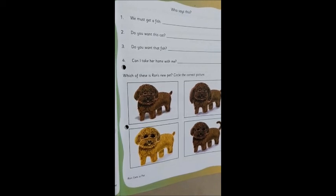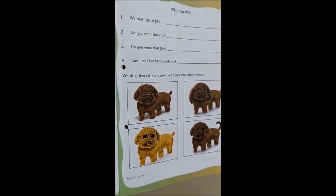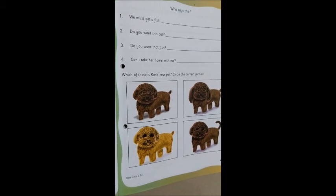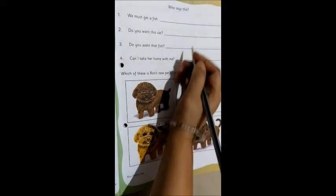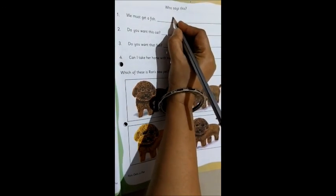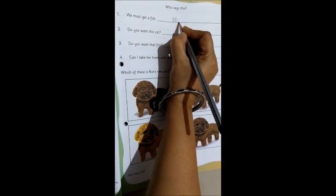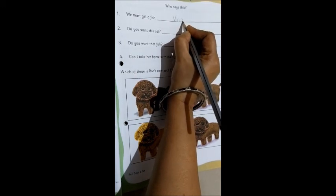We must get a fish. Who says this? Put on your thinking caps. Right. Mum. So, we will write capital M, U, and a M. Mum.